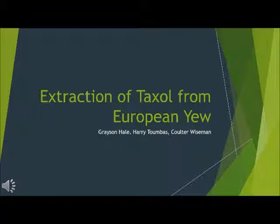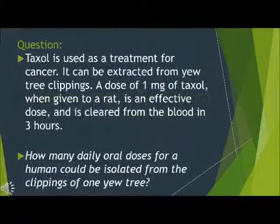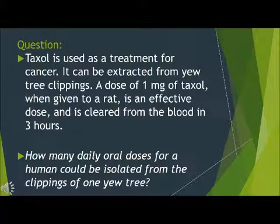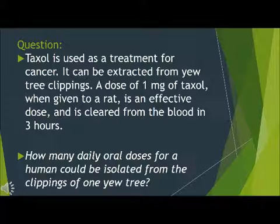Extraction of Taxol from European Yew. Taxol is used as a treatment for cancer and can be extracted from yew tree clippings. A dose of 1mg of Taxol, when given to a rat, is an effective dose and is cleared from the blood in 3 hours. How many daily doses for a human could be isolated from the clippings of one yew tree?